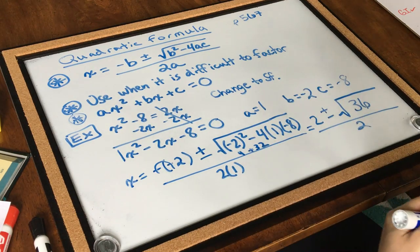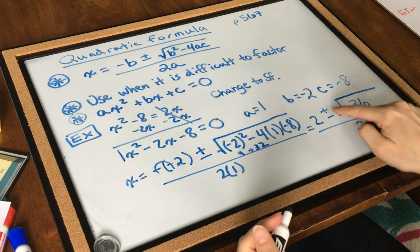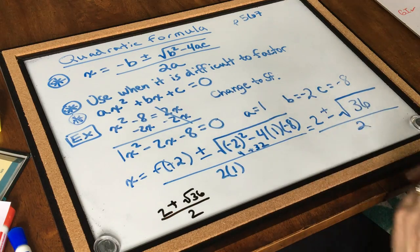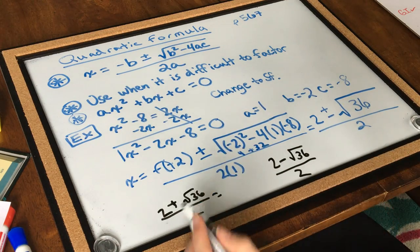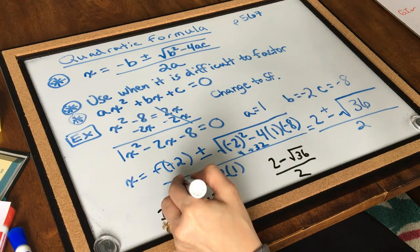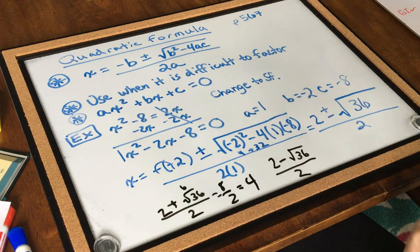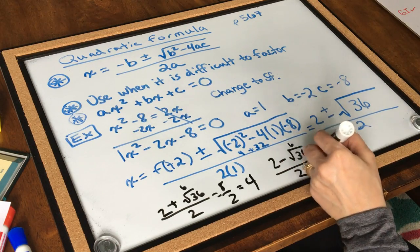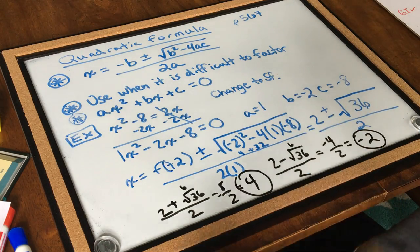Now I'll split it up into the plus and minus pieces. I have 2 plus the square root of 36, all divided by 2, and also 2 minus the square root of 36, all divided by 2. The square root of 36 is 6. So 2 plus 6 is 8, divided by 2, which is 4. And 2 minus 6 is negative 4, divided by 2, which is negative 2. So I have two solutions: x equals 4 and x equals negative 2.